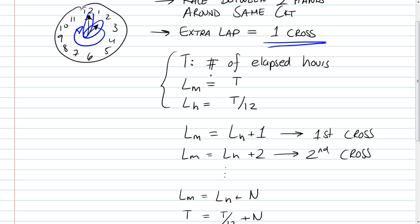We're going to assume that T is the number of elapsed hours, and Lm is the number of laps that the minutes hand has gone through, and Lh is the number of laps that the hours hand has gone through.